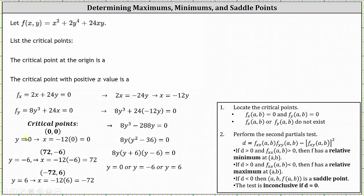When y equals zero, x equals negative 12 times zero, which equals zero — the first critical point is (0, 0). When y equals negative six, x equals negative 12 times negative six, which is positive 72, giving the critical point (72, -6). When y equals positive six, x equals negative 12 times six, which equals negative 72, giving the last critical point (-72, 6).